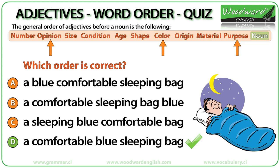A comfortable blue sleeping bag. Comfortable is an opinion, blue is a color, and sleeping refers to the purpose of the bag — what the bag is used for. The order is: opinion, then color, then purpose.